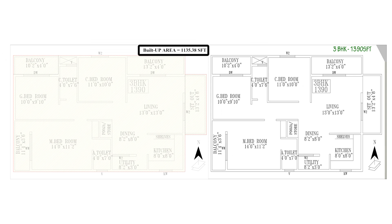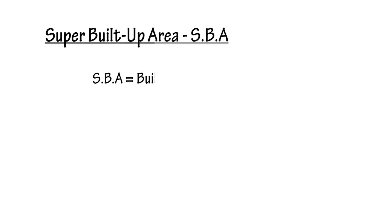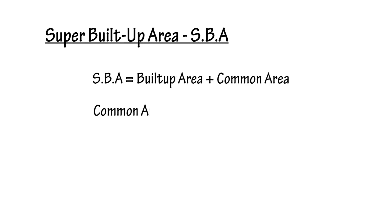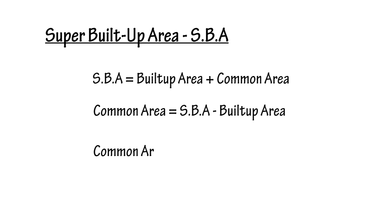Our built-up area was 1135.38 square feet. We know the saleable area from the brochure — it says 1390 square feet. The formula for SBA is: SBA = Built-up Area + Common Area. Therefore, Common Area = SBA − Built-up Area, which gives us 254.2 square feet. This is the additional area, or common area, we are speaking about.